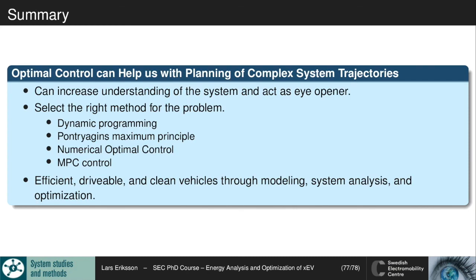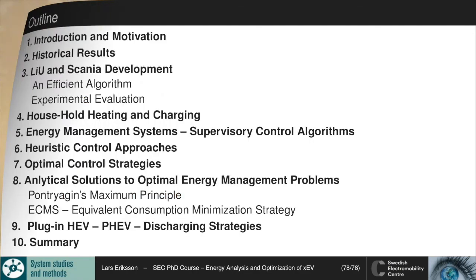With that we have come to the summary. Optimal control can help us with planning of complex system trajectories, increase understanding of the system, and act as an eye opener. The art is to select the right method for the problem — dynamic programming, Pontryagin's maximum principle, numerical optimal control, or MPC/receding horizon control. This is an example of how we can use modeling, system analysis, and optimization to get efficient, drivable, and clean vehicles. With that I've come to the conclusion of this lecture, and hope to see you in the next lecture.